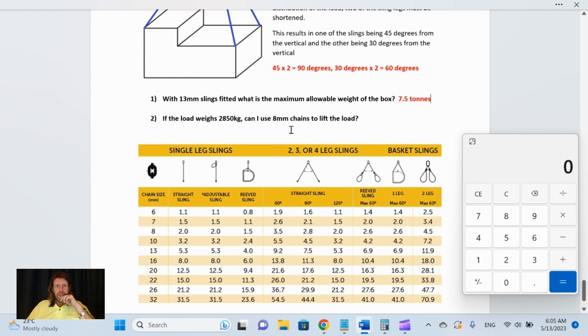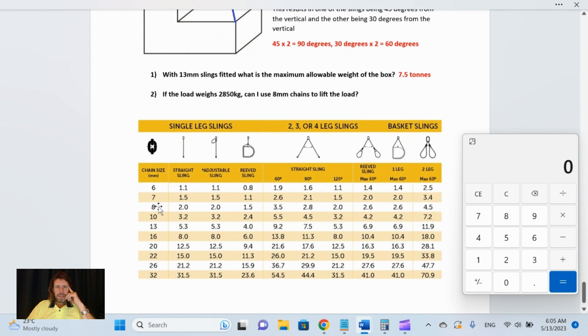If the load weighs 2850 kilograms, can I use 8 mil chains to lift the load? We've got 90 degrees, and then 2850 is slightly more than 2.8 tons, which is 2800 kilograms. So if the load weighs 2850 kilograms, can I use 8 mil chain? No, exceeds capacity.